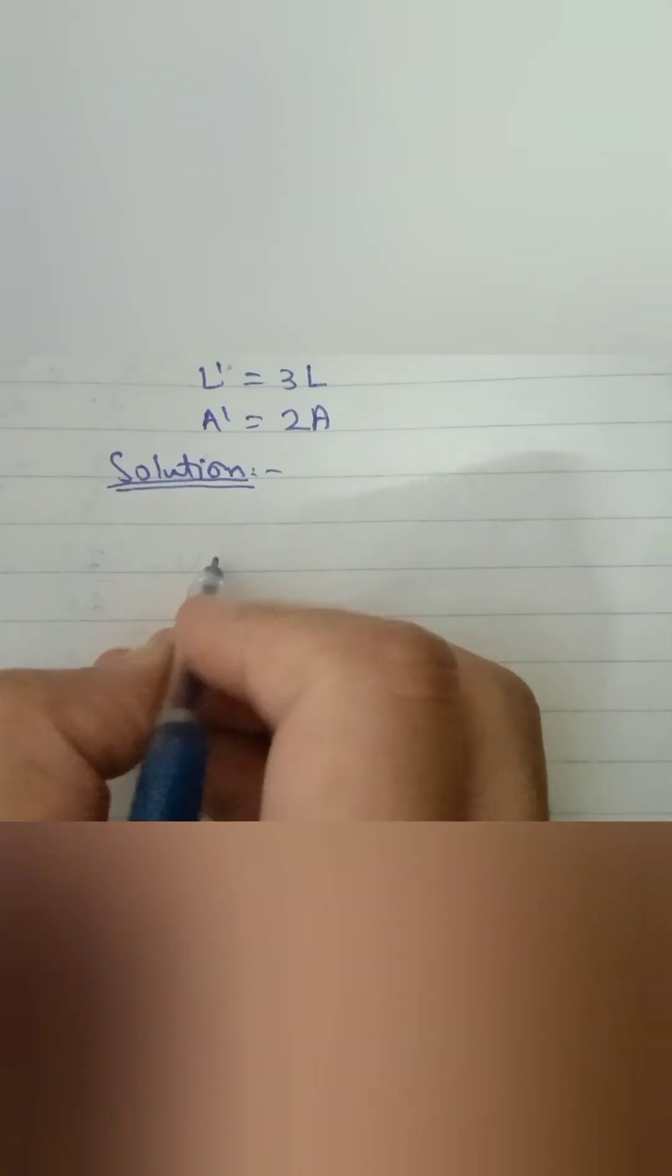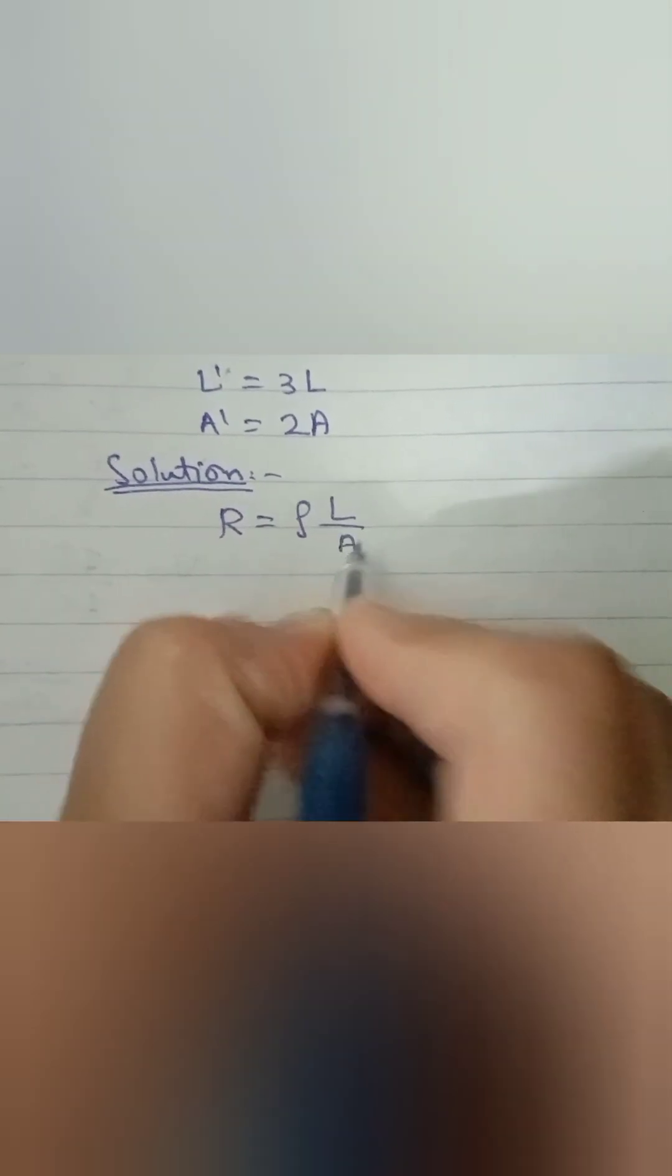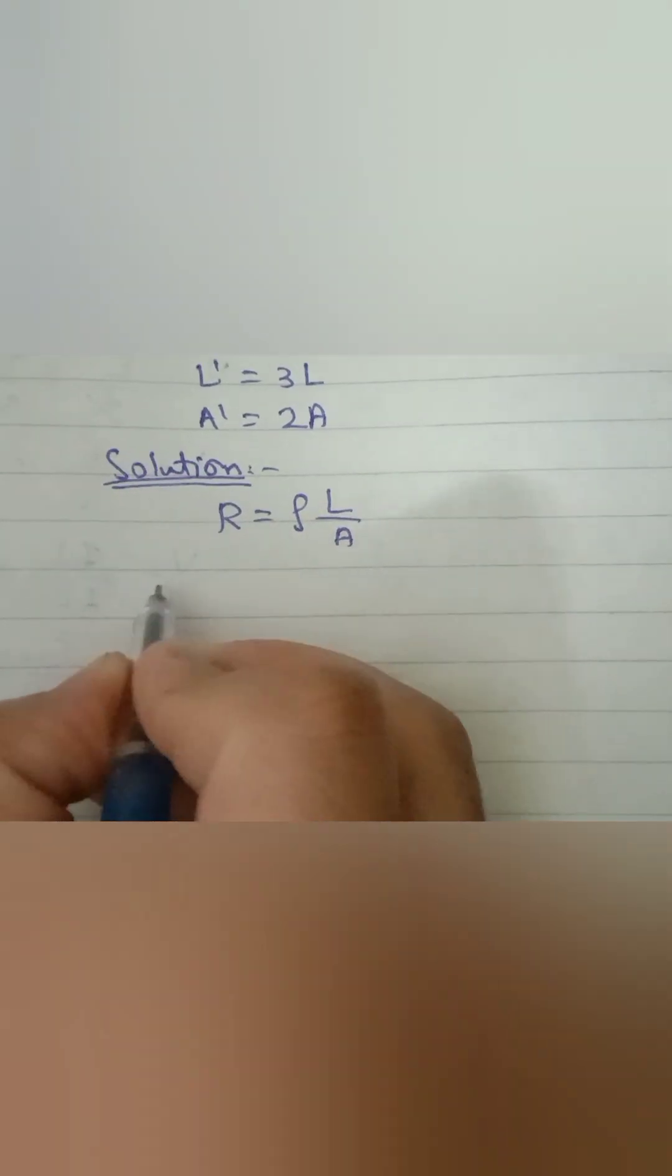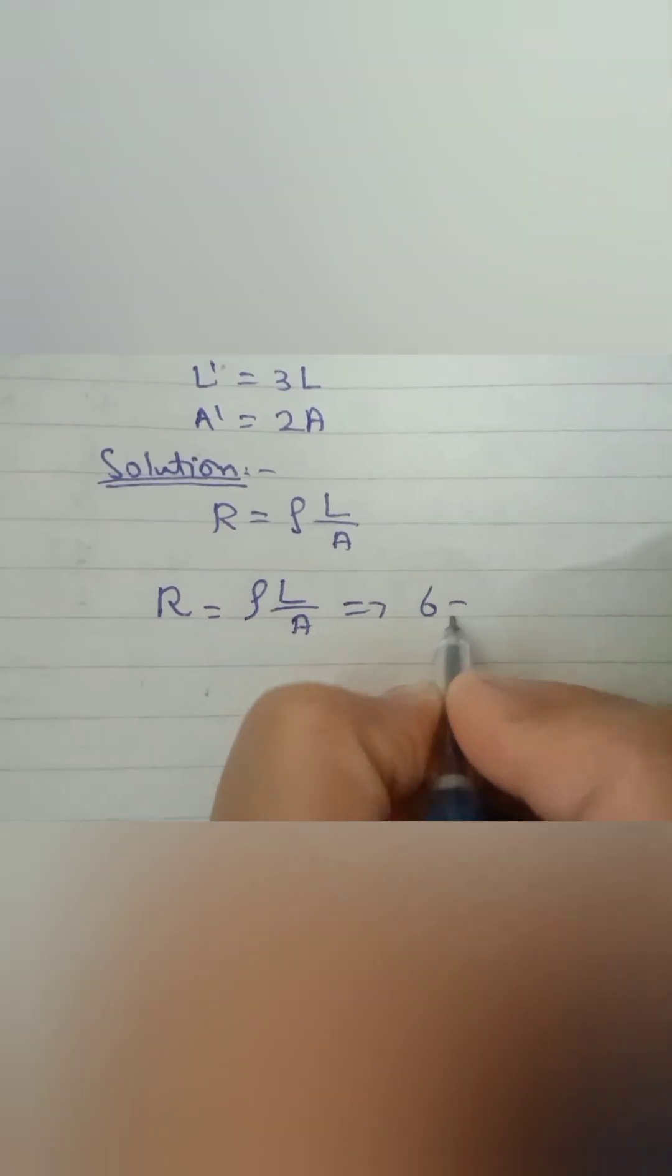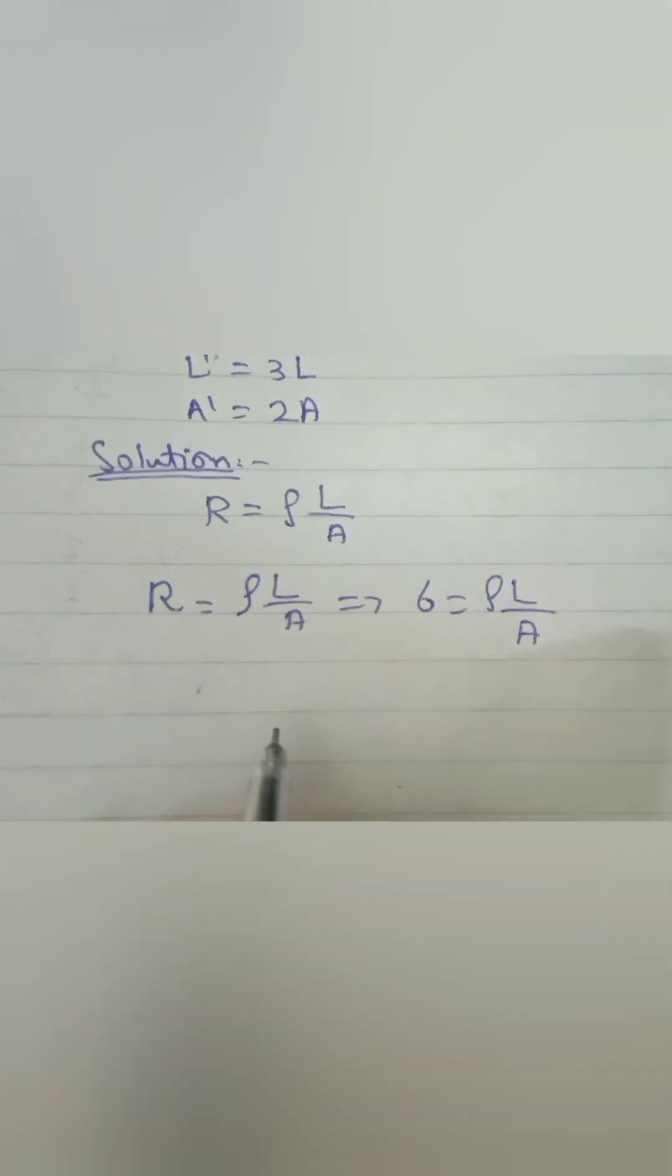We know that the equation of resistance is R = ρL/A. This is the general equation. Just put the value of resistance and the equation becomes 6 = ρL/A.